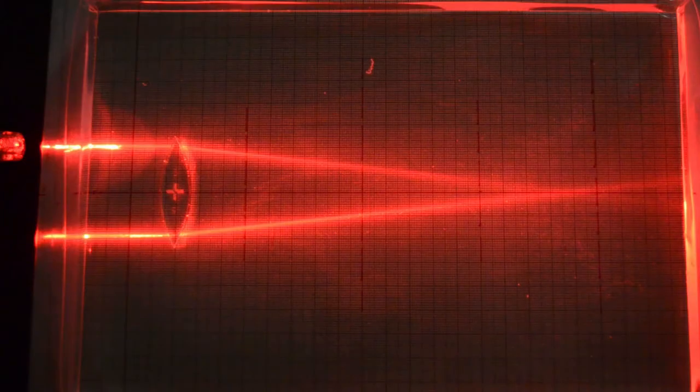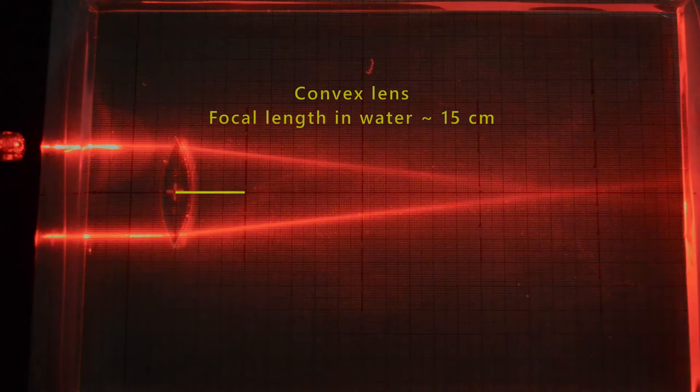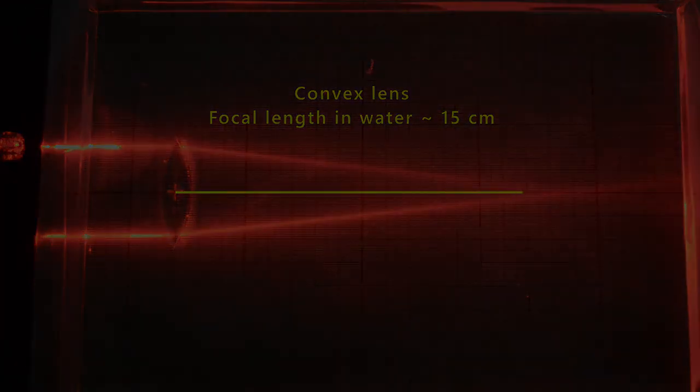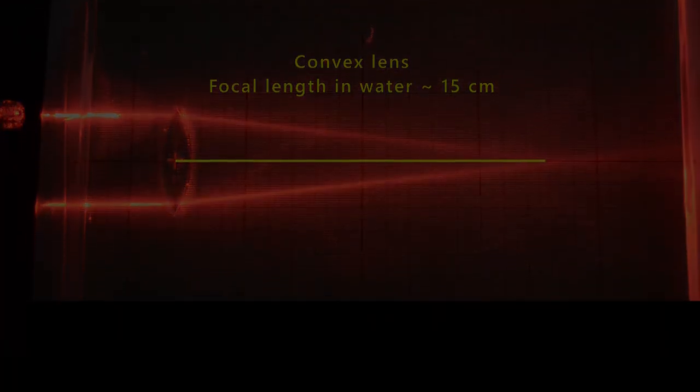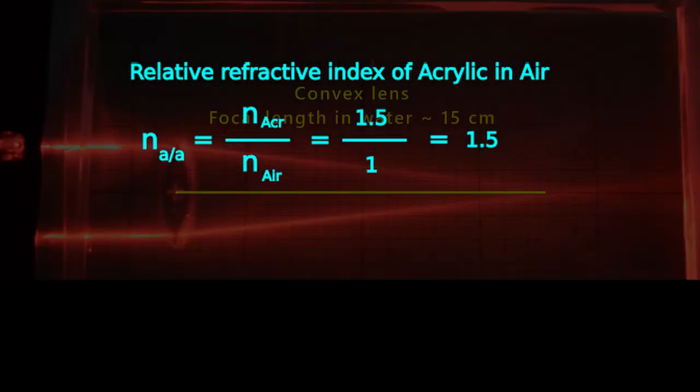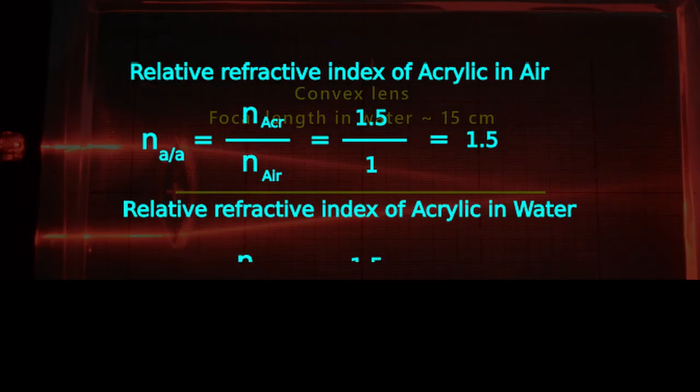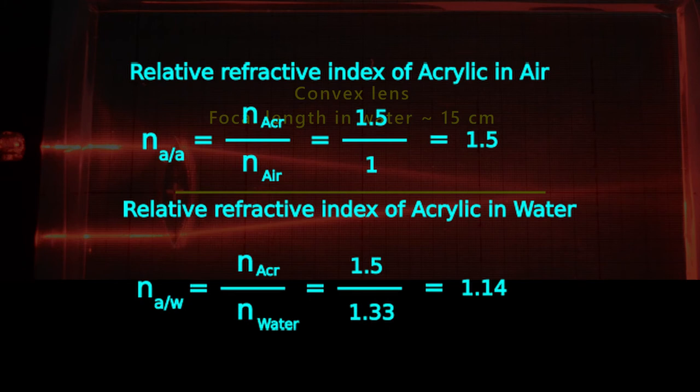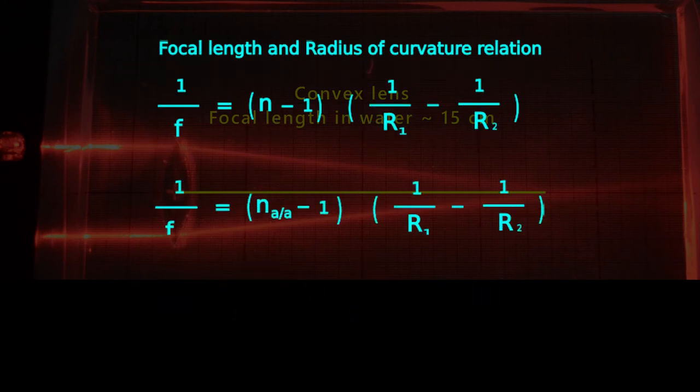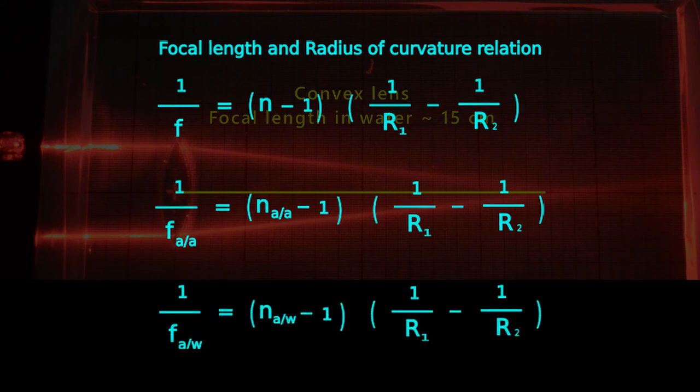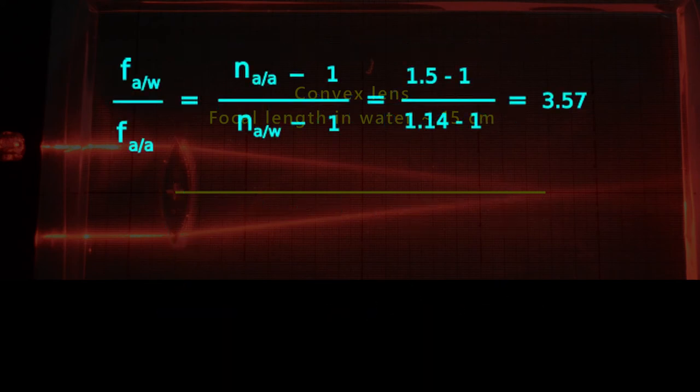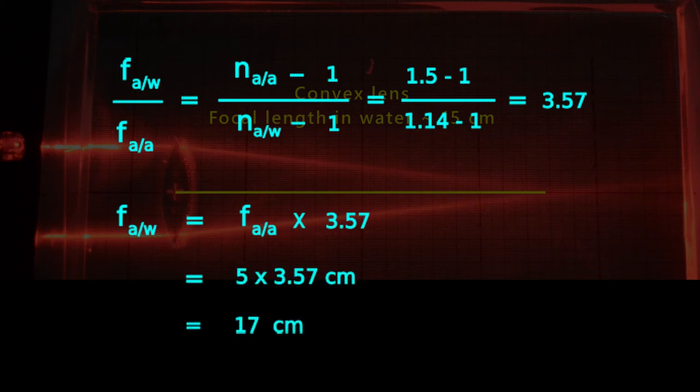Calculating focal length in different mediums is easy. Here is what you need to do. We will use relative refractive index of acrylic in air as well as water. Rearranging the equation yields interesting results. Focal length of acrylic lens in water is almost 3.5 times its focal length in air. Our findings are nearer to the calculated value. This difference can be attributed to the casual homely setup, not very smooth surface of the lens, and reading errors.